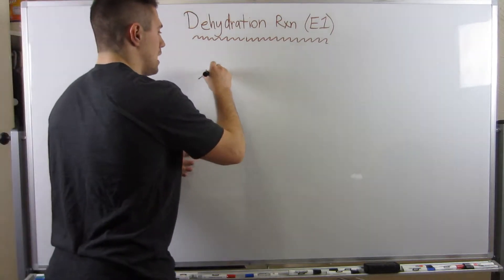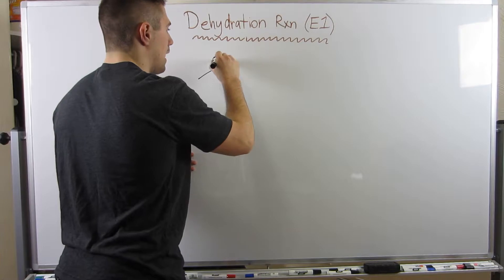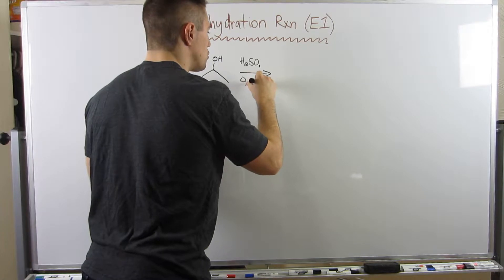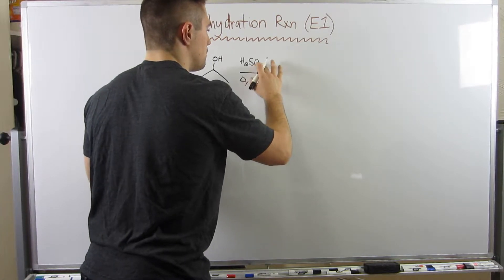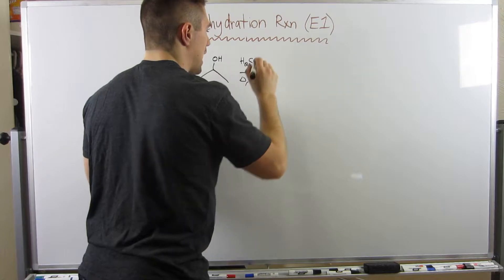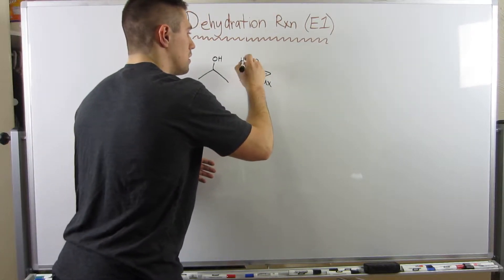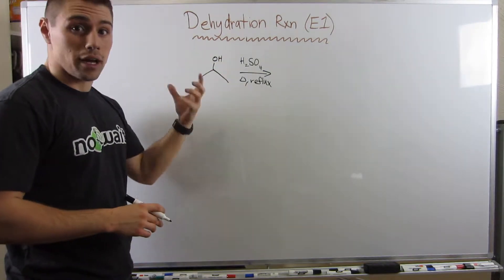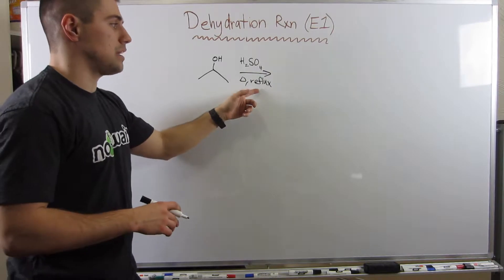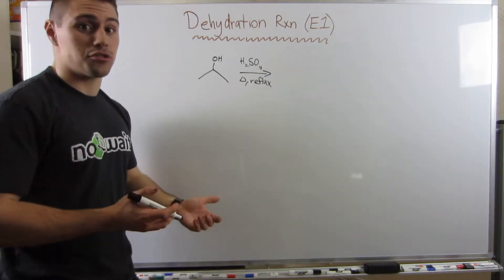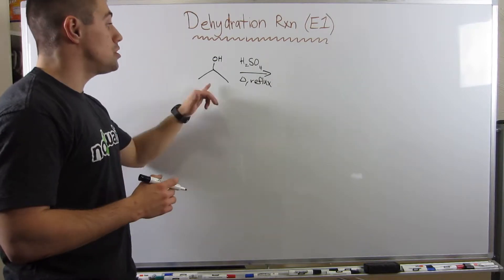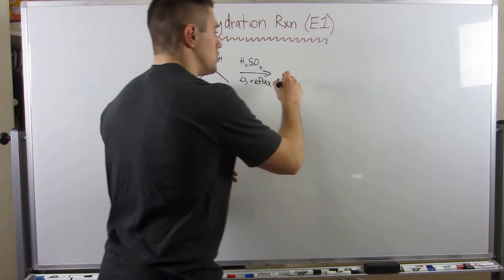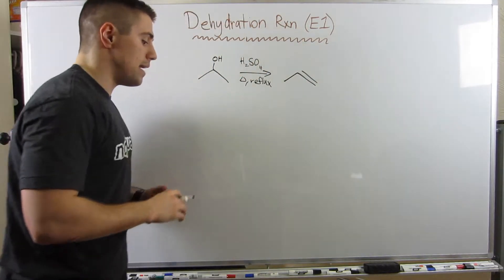Let me just throw up an example reaction and then we will go through the mechanism. So here's how this reaction works. If you have an alcohol and you subject it to H2SO4, some heat, a delta, and a lab technique called reflux, which you don't really have to worry about.